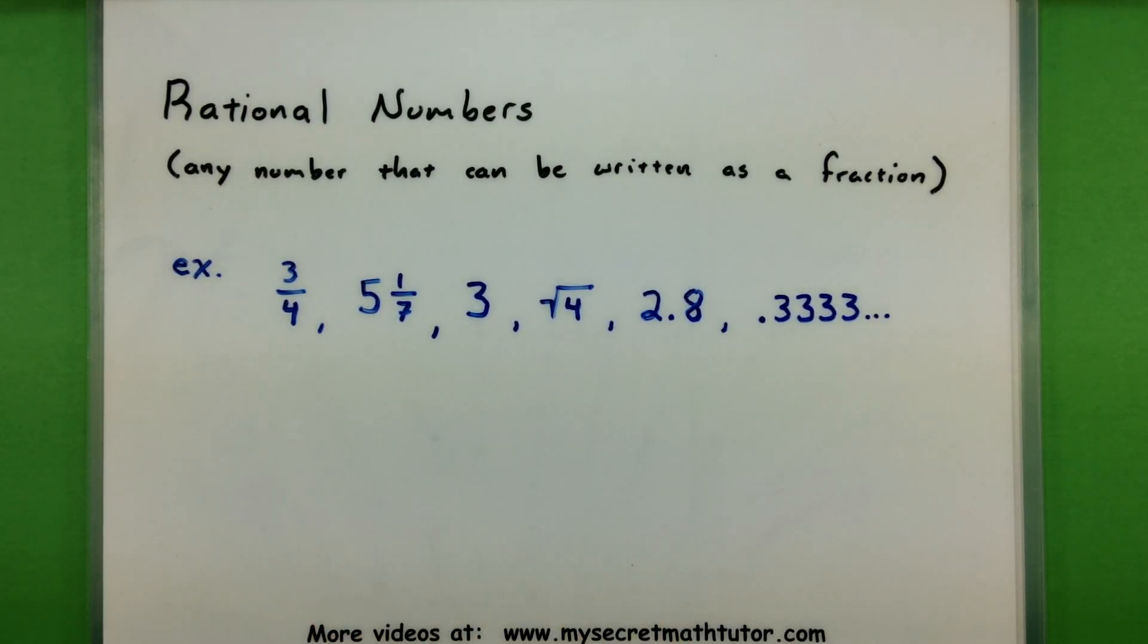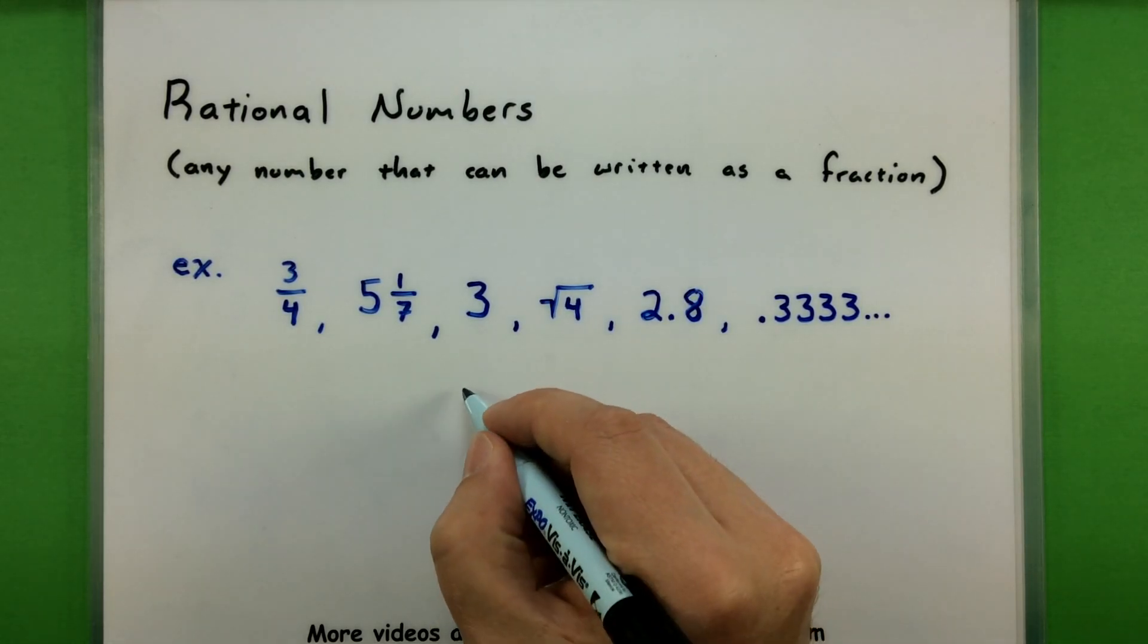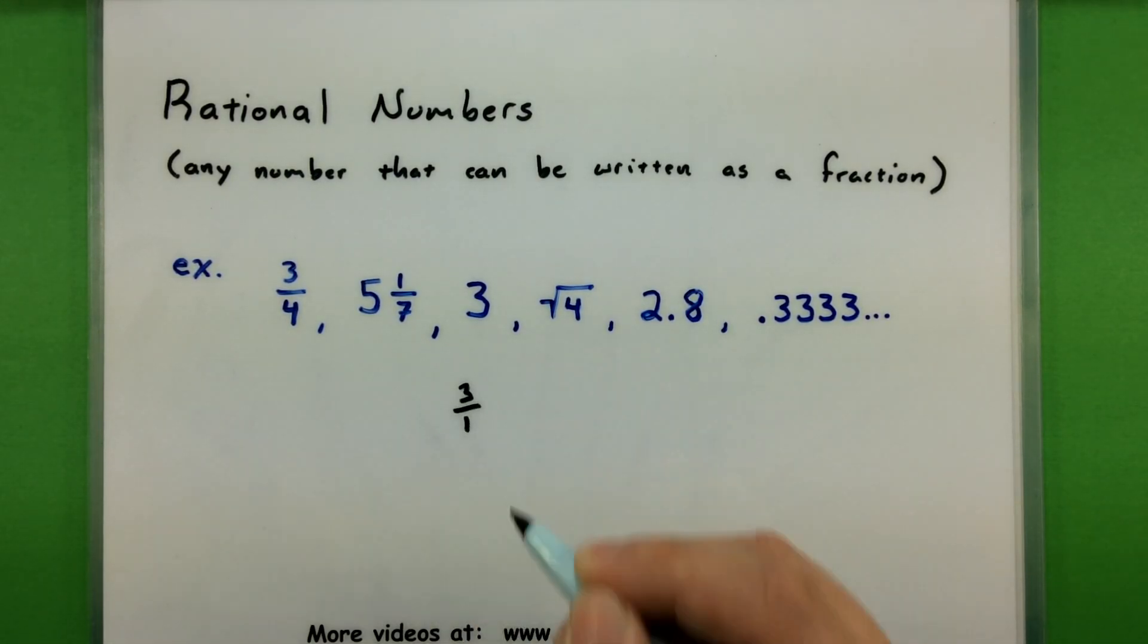of course I can write it as a fraction, so it would be counted as a type of rational number. So these guys both contain fractions. Yes, they are rational. It also includes those groups we saw before like integers, natural numbers, and whole numbers, because all of these can also be written as a fraction simply by putting them over one.